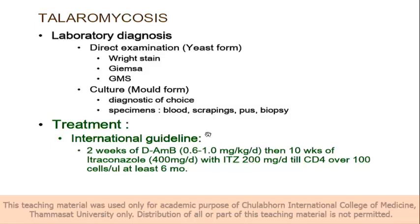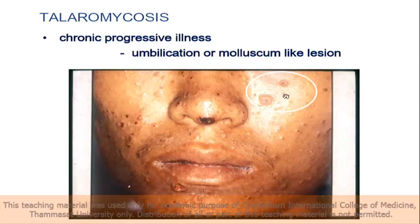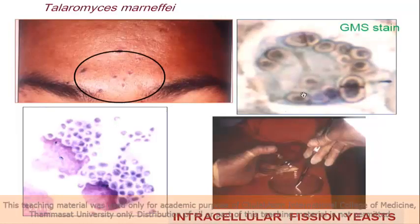Treatment: fungicidal amphotericin B, then follow with itraconazole. Both histoplasmosis and talaromycosis treatment is very similar. This shows the umbilicated skin lesions — molluscum-like lesions. You have to scrape in the center until you get some blood-tinged sample, then smear on a slide or inoculate in the blood plate.